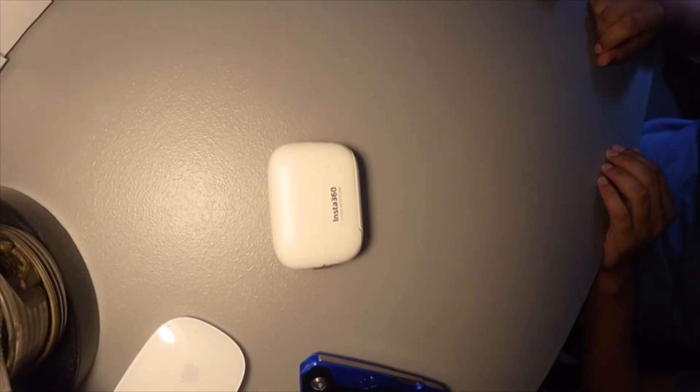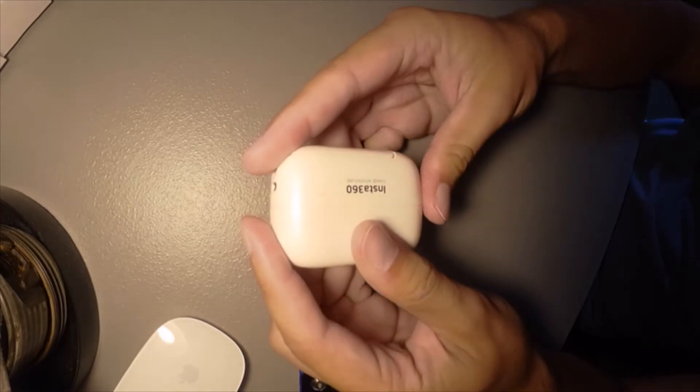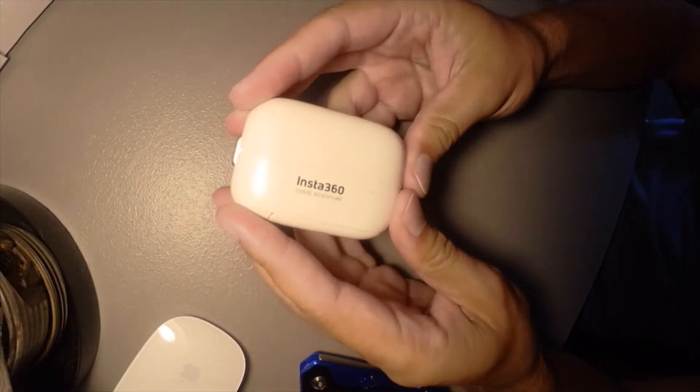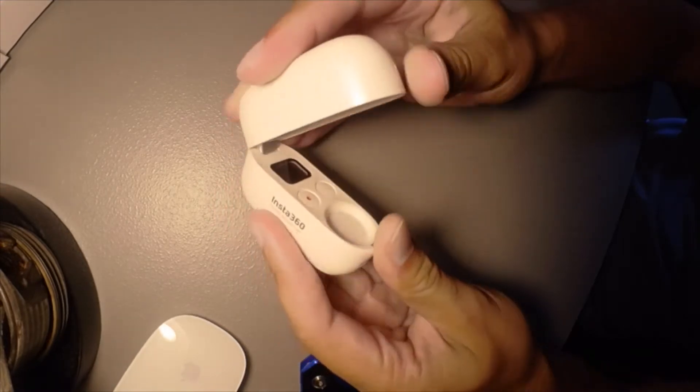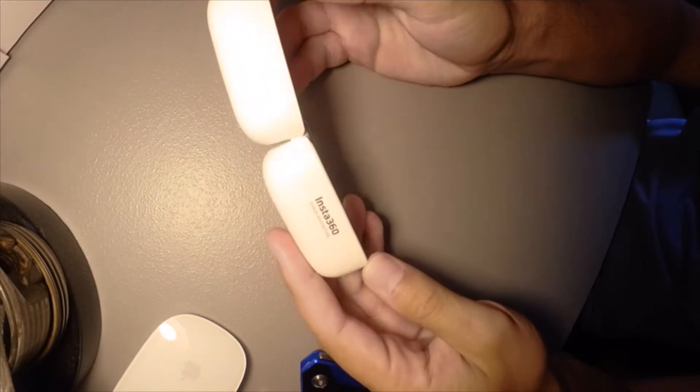This is going to be a teardown of the Insta360 Go charging case. As you can see, it's just a little white charging case with nothing inside because this one was actually water damaged. There is no camera in there, and I'm just kind of curious about how this thing is put together - if it's glue, screws, or snap-on pieces.